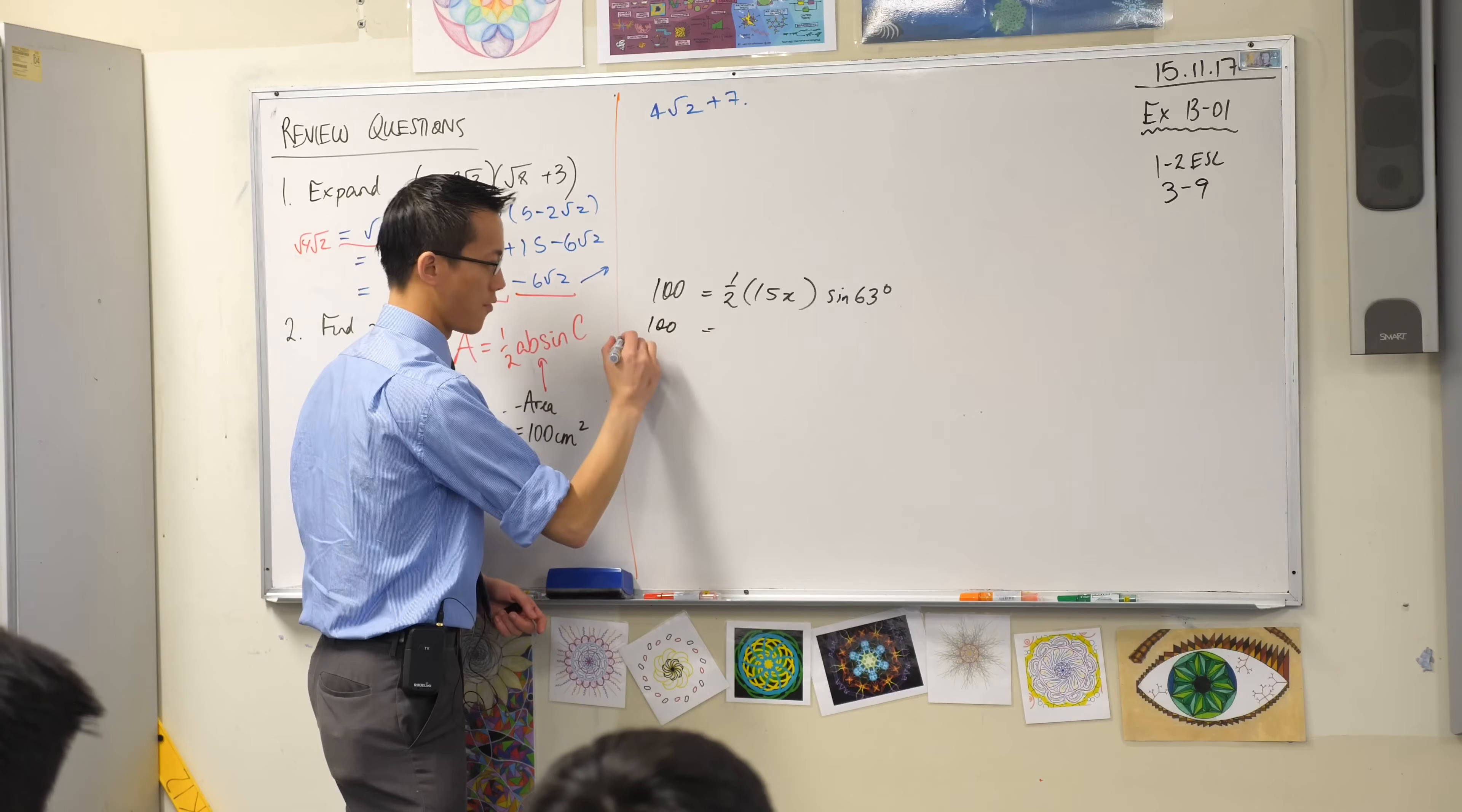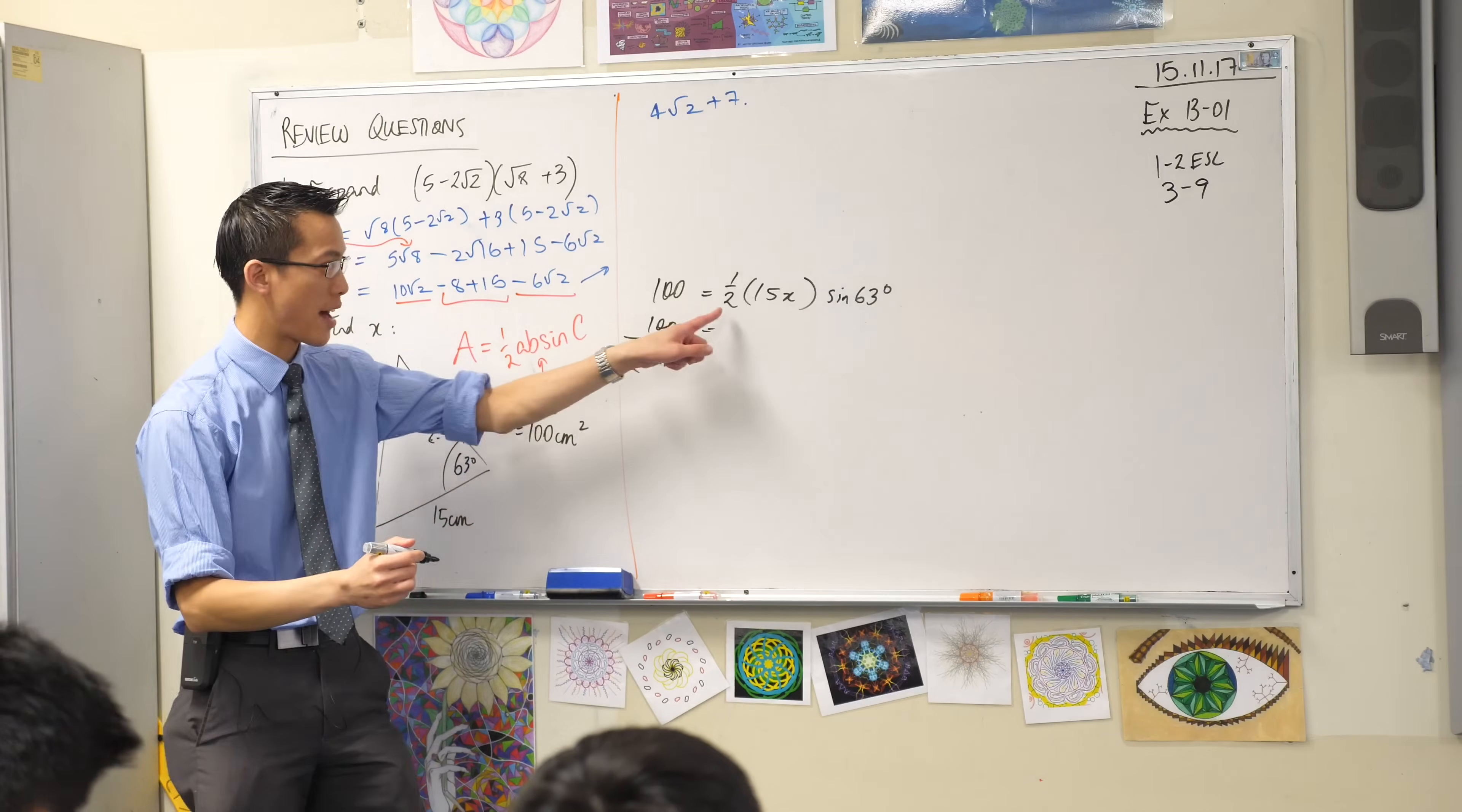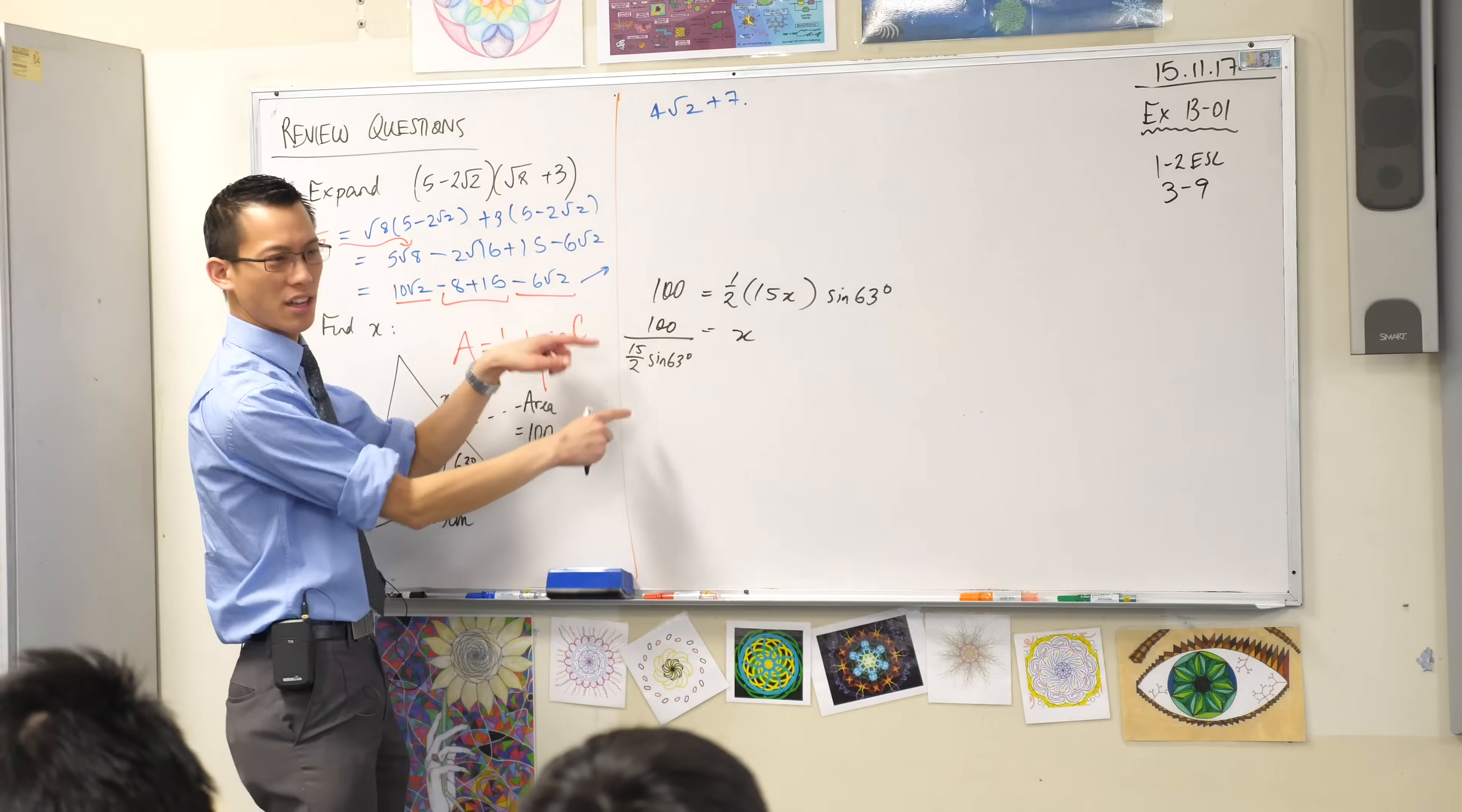So if I divide everything on this side, I'm gonna get 100 divided by 15 on 2 sine 63. Yeah, is that okay? You see I've divided everything over there leaving x behind.